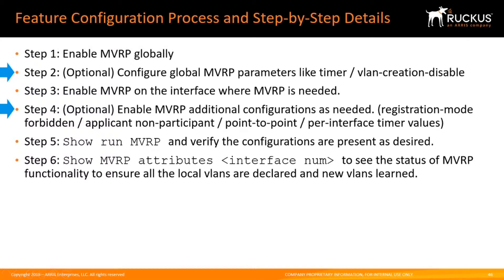Last time we looked at the steps to make MVRP happen. We configured MVRP globally — that was Step 1 — and we enabled MVRP on the interfaces — that was Step 3. We skipped over Step 2 and Step 4 because they were optional parameters. That's what we're going to look at this time. Under Step 2, we'll look at timers and VLAN creation disable. Under Step 4, we'll look at registration modes, applicant modes, point-to-point, and timers.